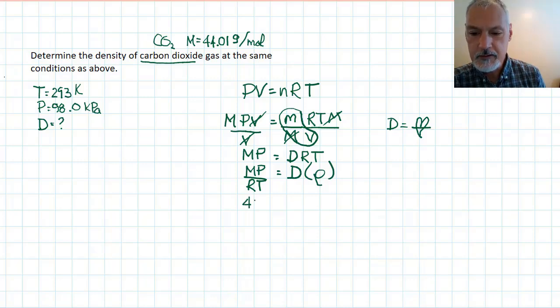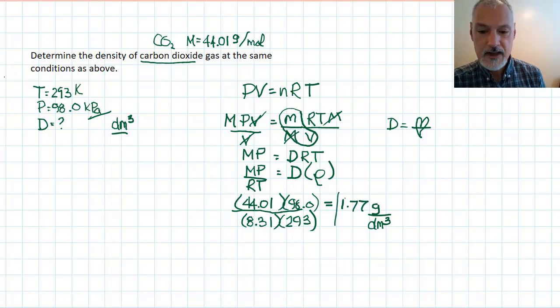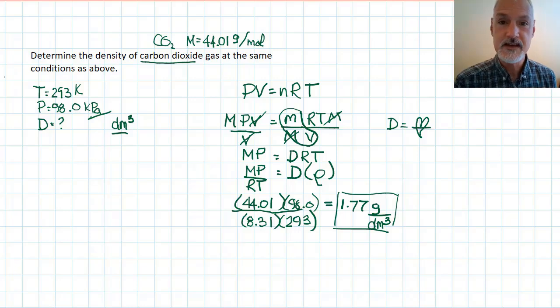Putting in the values, we have 44 for the molar mass. Our pressure is 98.0. R, 8.31 from the data booklet. And our temperature, 293 Kelvin. Solving for that, 1.77. Now, mass is in grams. What about volume? Well, if we're using kilopascals over here, remember that kilopascals are paired with liters or decimeters cubed with the use of R. So this volume for my density must be in decimeters cubed. So that's it. There's a look at a couple of problems that employ the use of the ideal gas law. In the next section, we'll take a look at reacting gases. Thanks for watching.